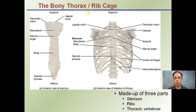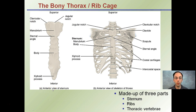Starting with the bony thorax or rib cage, notice that the ribs are labeled 1 through 12, starting at the top and working your way down. We have the sternum, and at the end of the sternum it's called the xiphoid process — that's the little portion sticking out down here. You can see a zoomed-in version here showing the superior and inferior orientation, which should help you understand the orientation of the bone in the body. The body of the sternum is located right here.